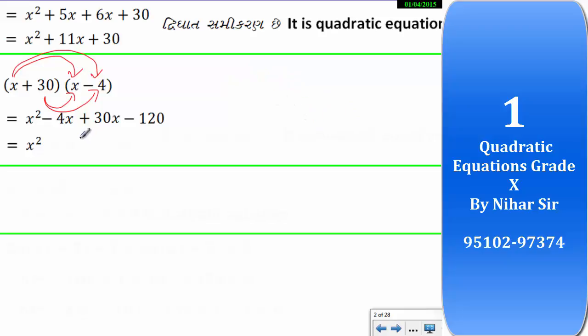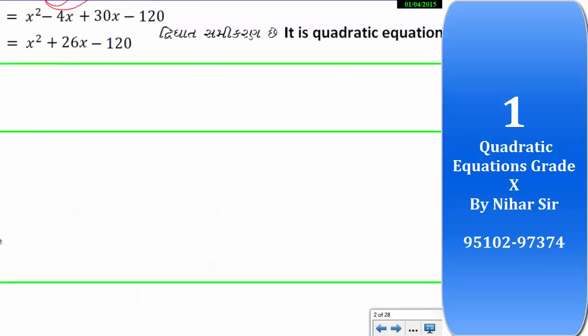Bigger number sign plus 26. So, it is plus 26x minus 120. So, it is quadratic equation.